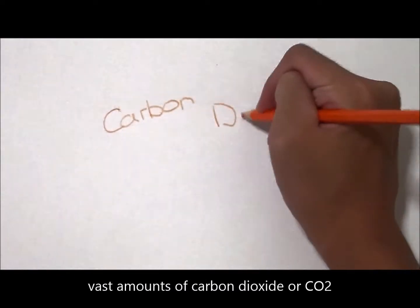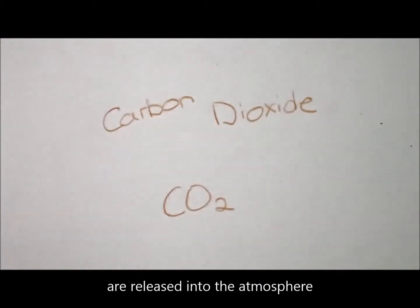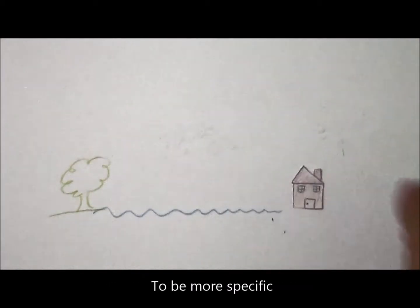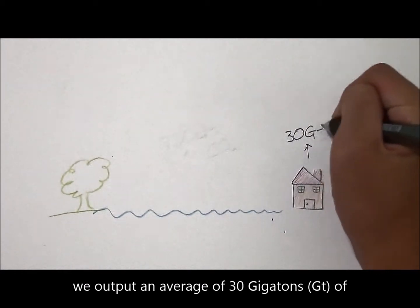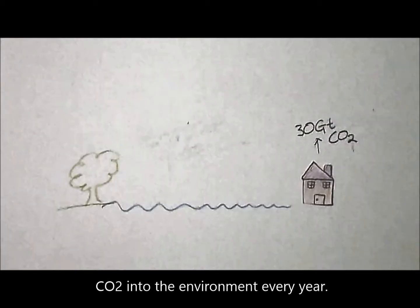Vast amounts of carbon dioxide or CO2 are released into the atmosphere. To be more specific, we output an average of 30 gigatonnes of CO2 into the environment every year.